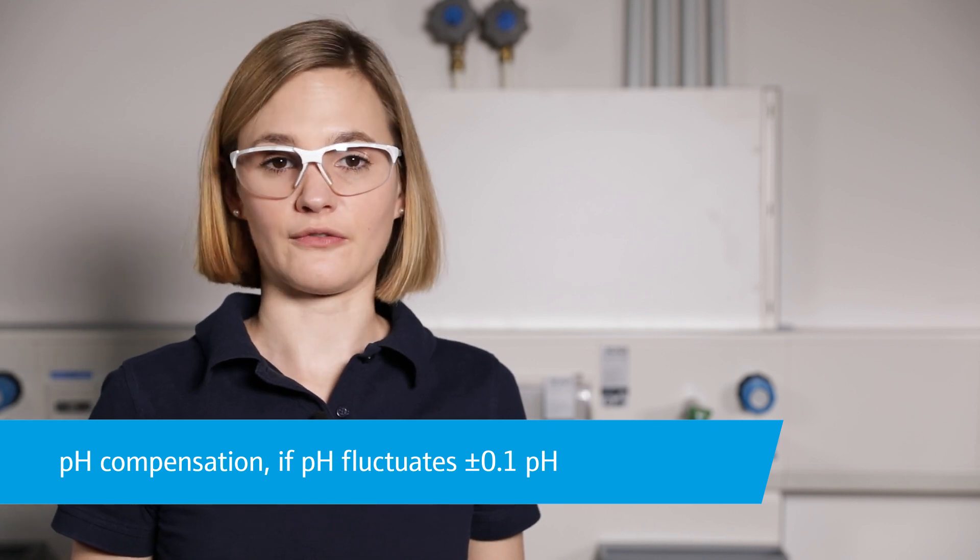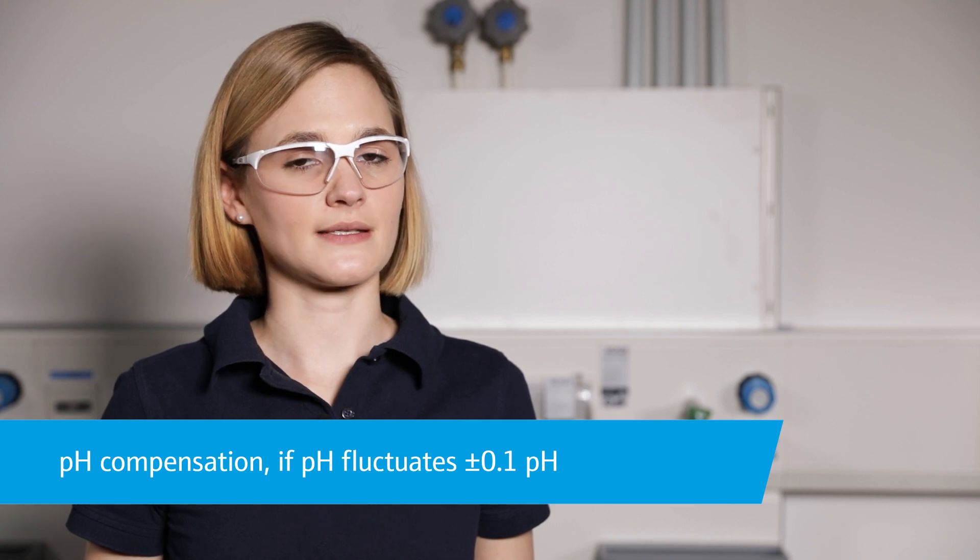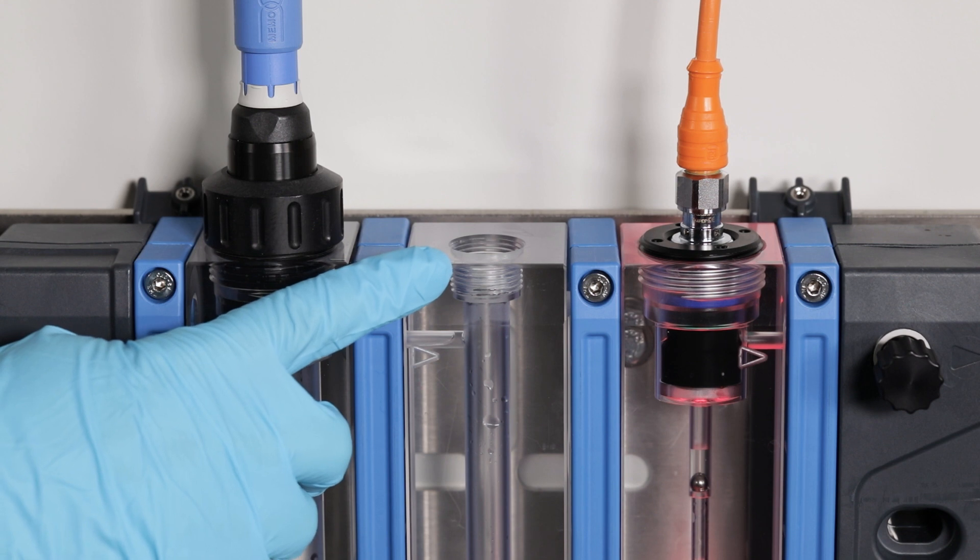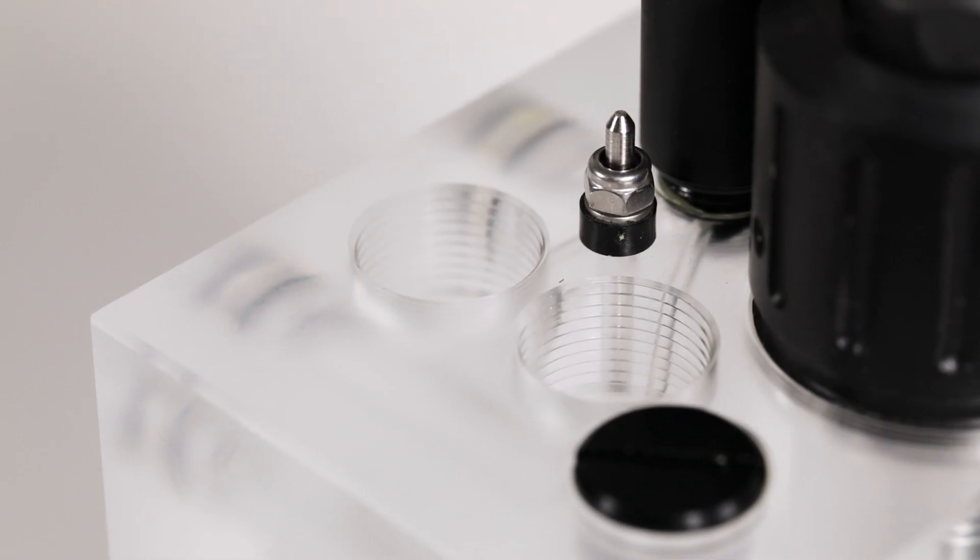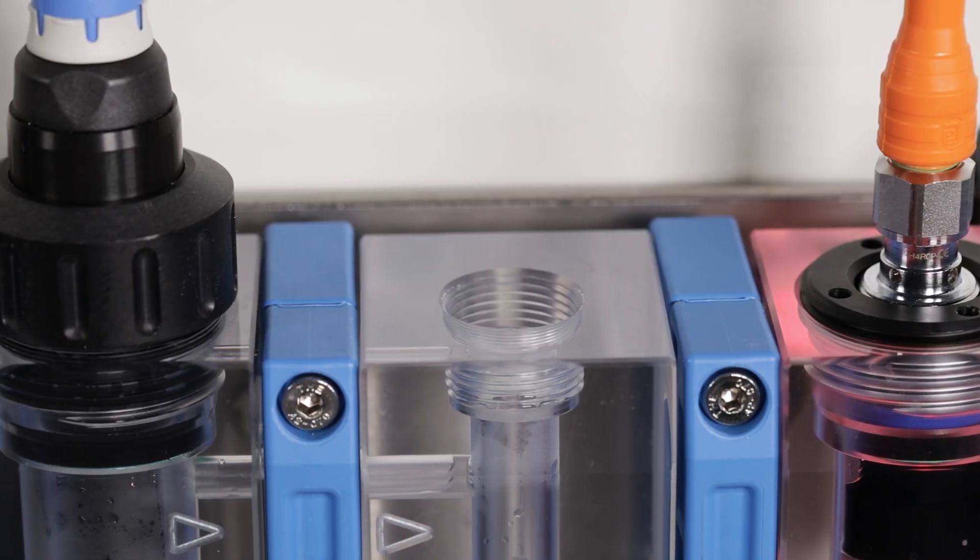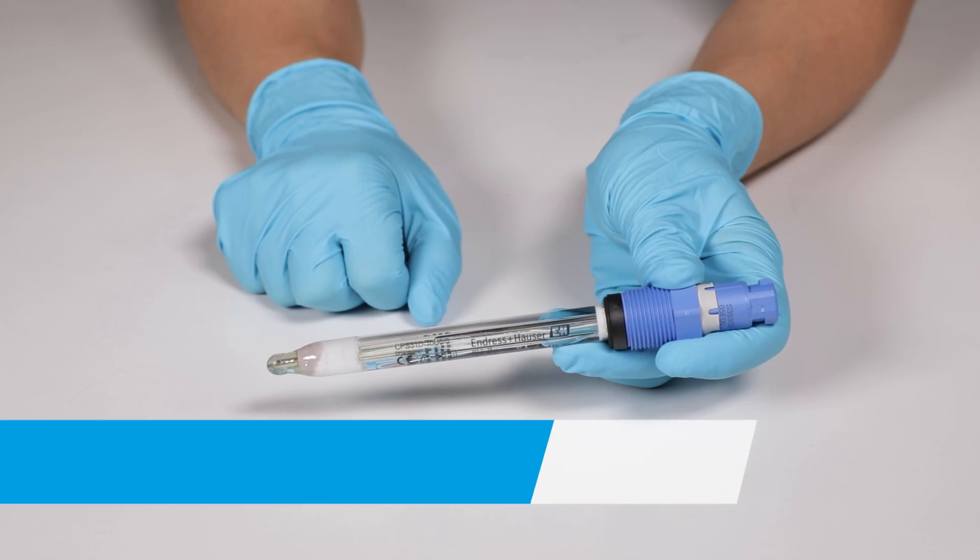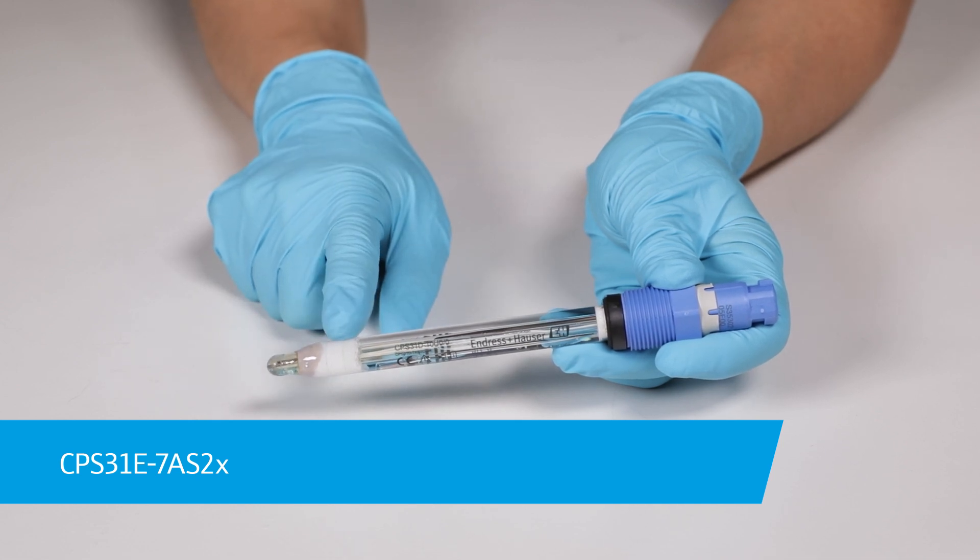As the free chlorine measurement is pH dependent, a pH compensation is recommended if the fluctuation of the pH value in water exceeds plus minus 0.1 pH. In this case use the flow assembly Flowfit CYA27 or the former CCA250. They are designed to accommodate all sensors needed for accurate disinfection measurement and control. For disinfection applications and drinking water the CPS31E with salt ring is recommended.